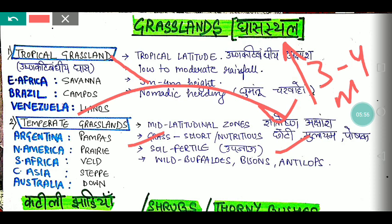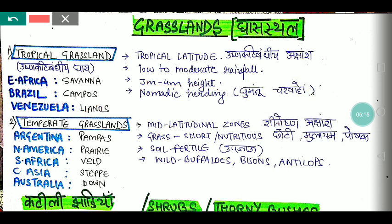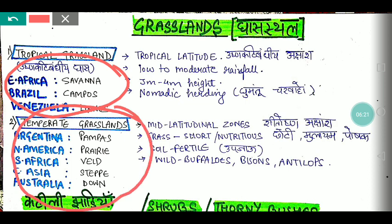Temperate grasslands are very fertile and good for cultivation. Animals found here include wild buffalo, bison, and antelopes. These grasslands are known by different regional names: Pampas in Argentina, Prairie in North America, Veld in South Africa, Steppe in Central Asia, and Down in Australia. This is very important — do not confuse these names.